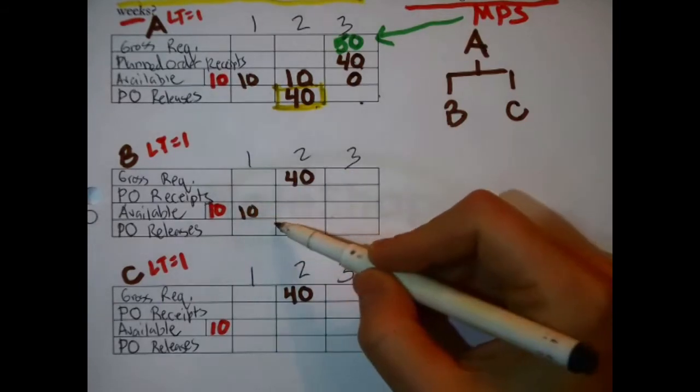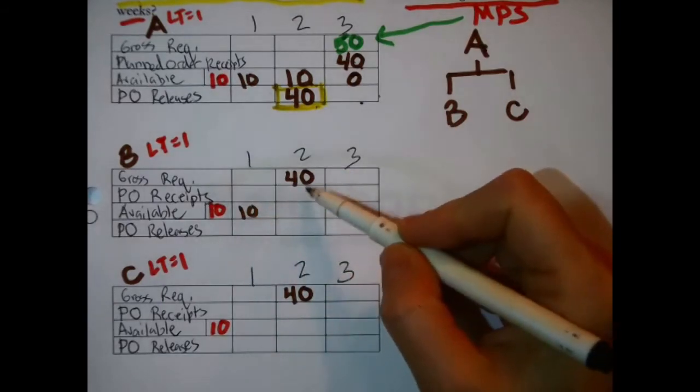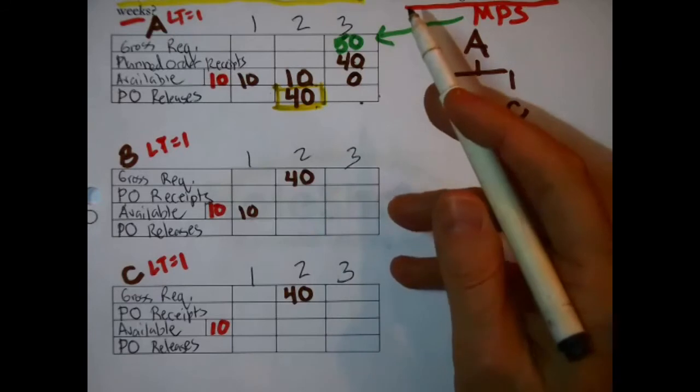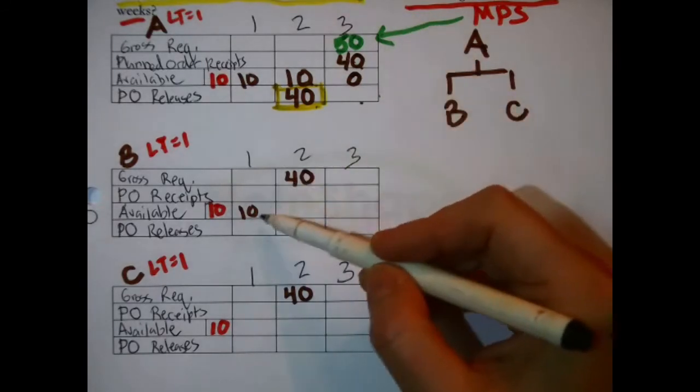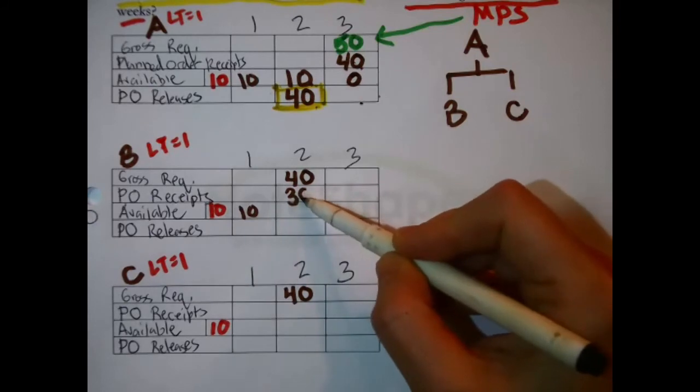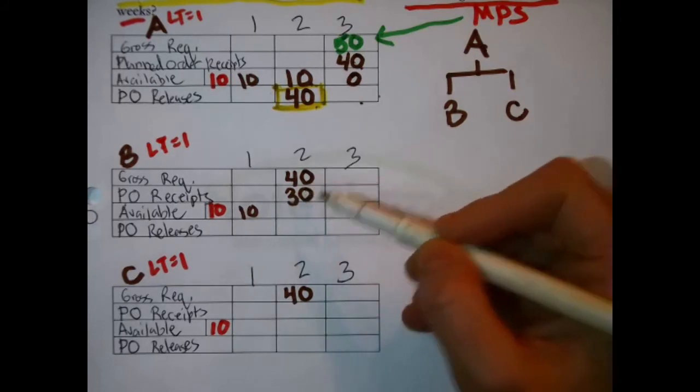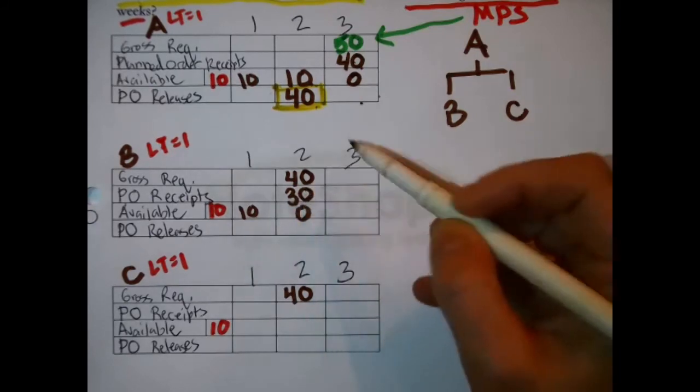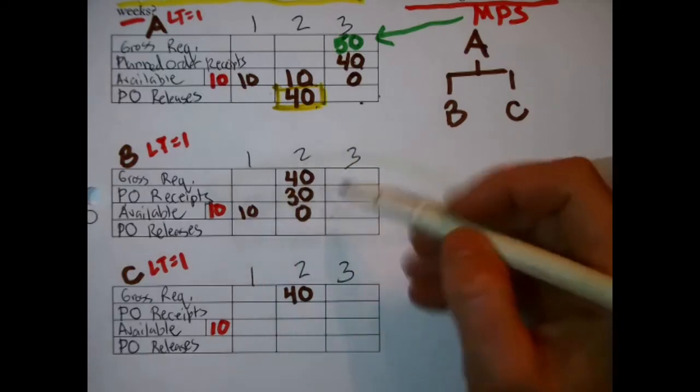We have ten, so we'll have ten with us going into the second week in which forty need to be ready to go, leave. That means ten minus forty, we are short thirty, so we will schedule to receive those thirty that we need right then. That means that we've wiped out inventory because we used those ten.